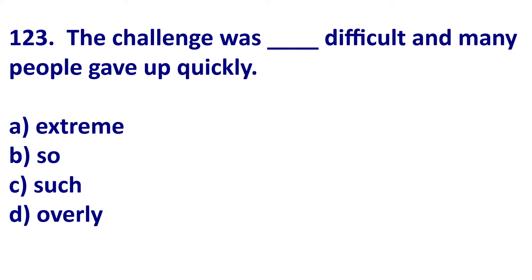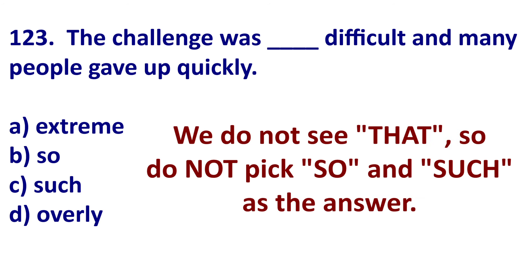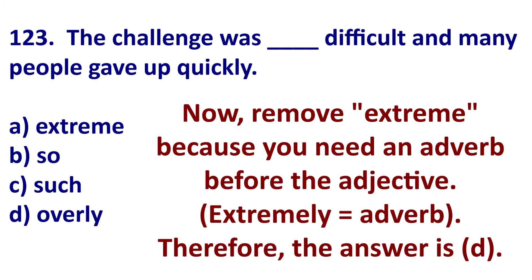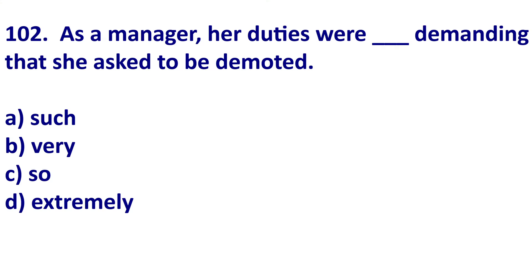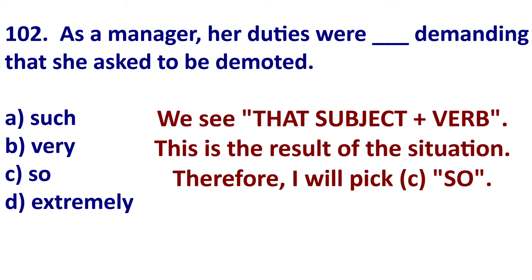If you do not have 'that' in the TOEIC question, do not pick 'so.' Example: 'The challenge was blank difficult and many people gave up quickly.' There is no 'that,' so eliminate B and C immediately. Also remove 'extreme' because you need an adverb: 'extremely difficult.' So if I have 'so + adjective' or 'so + adverb,' I need 'that' to follow. Another question: 'As a manager, her duties were blank demanding that she had to be demoted.' We have 'that' and a result — so pick C.